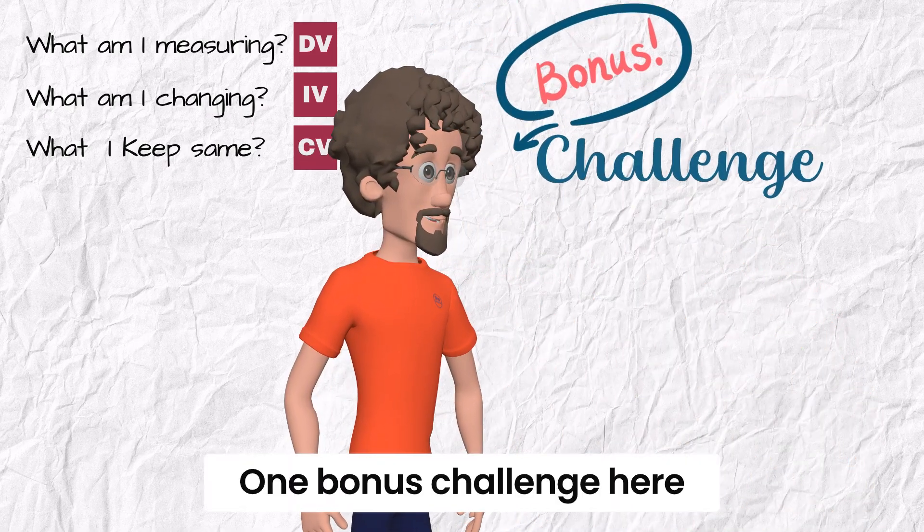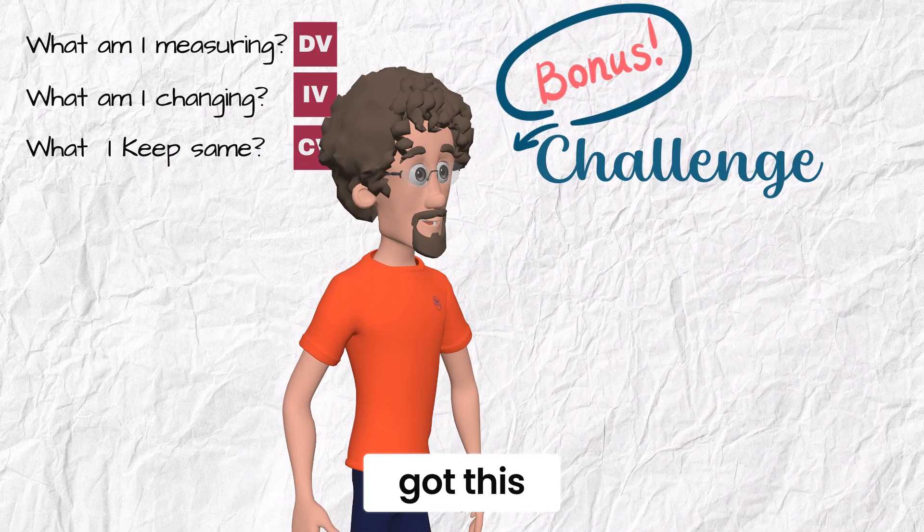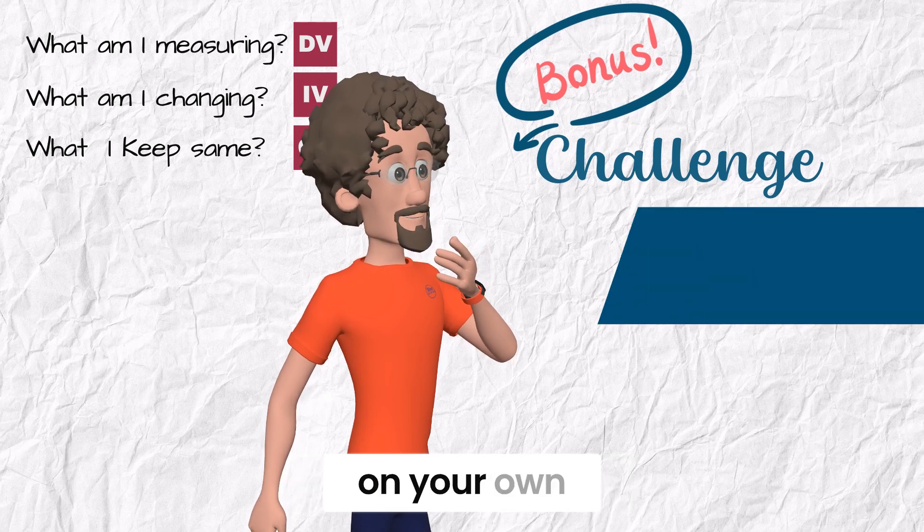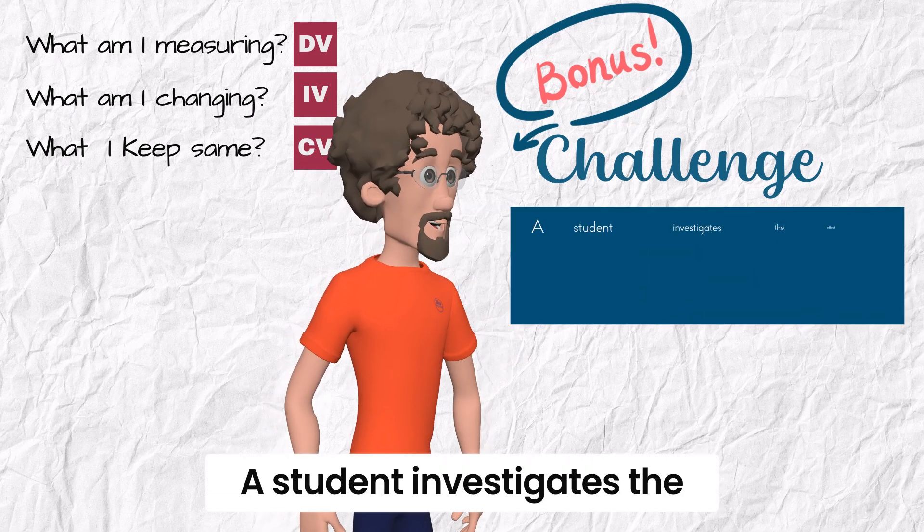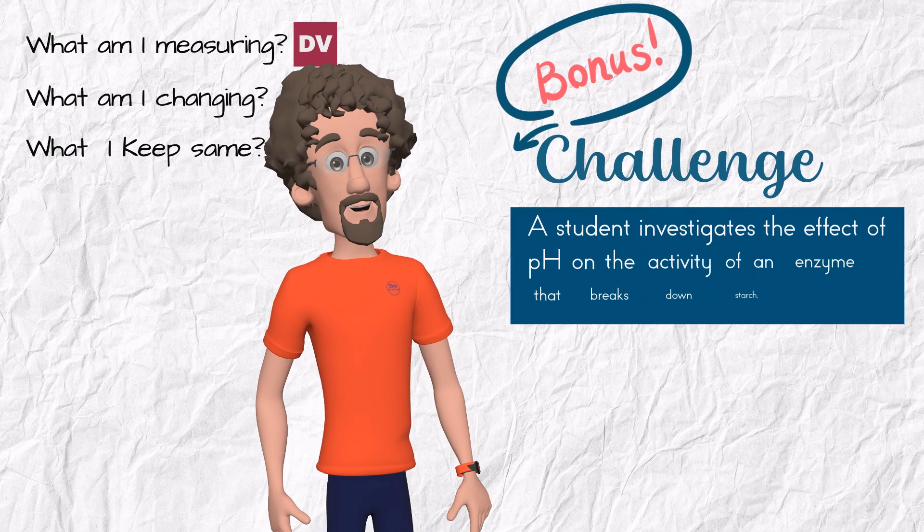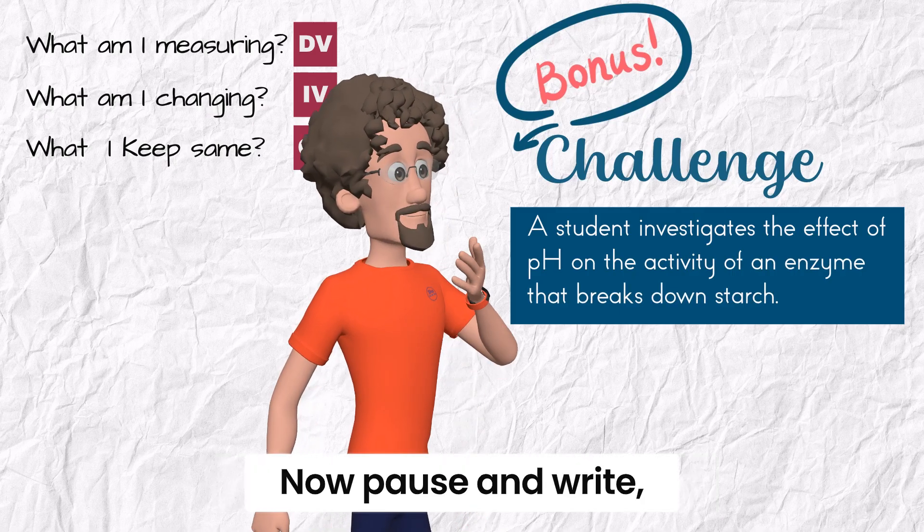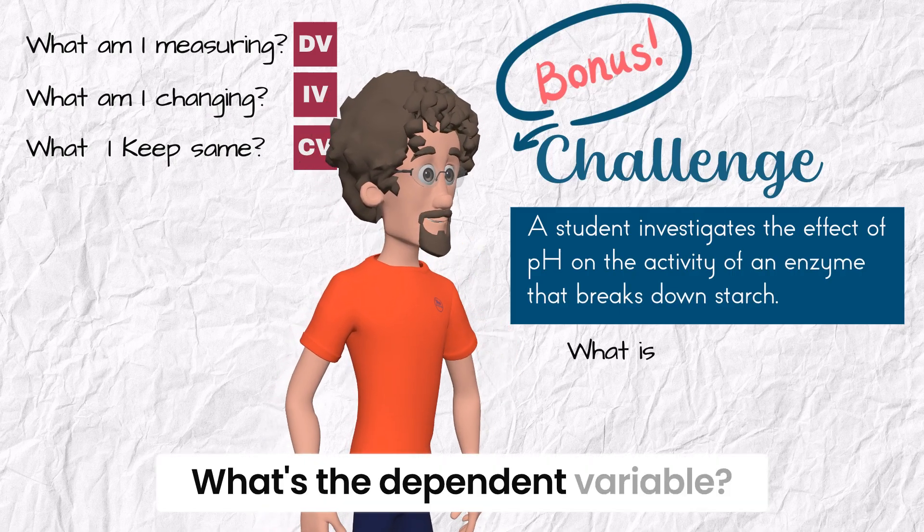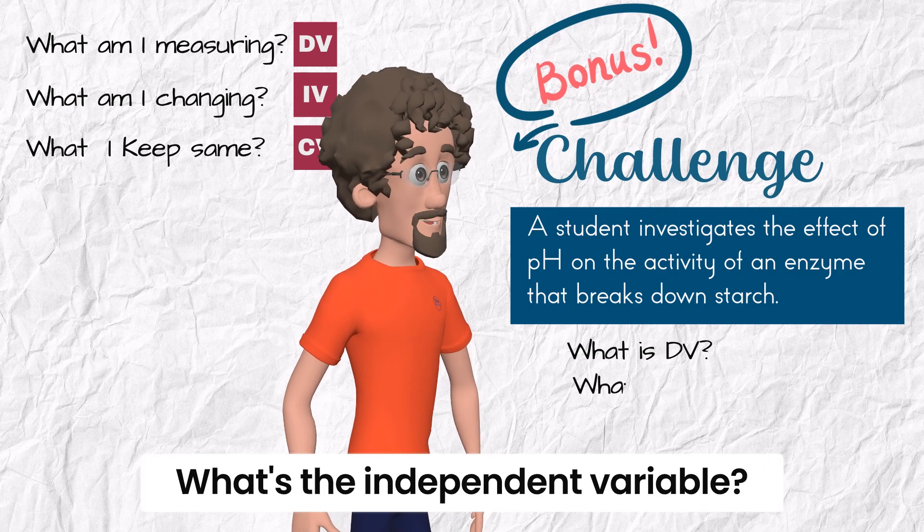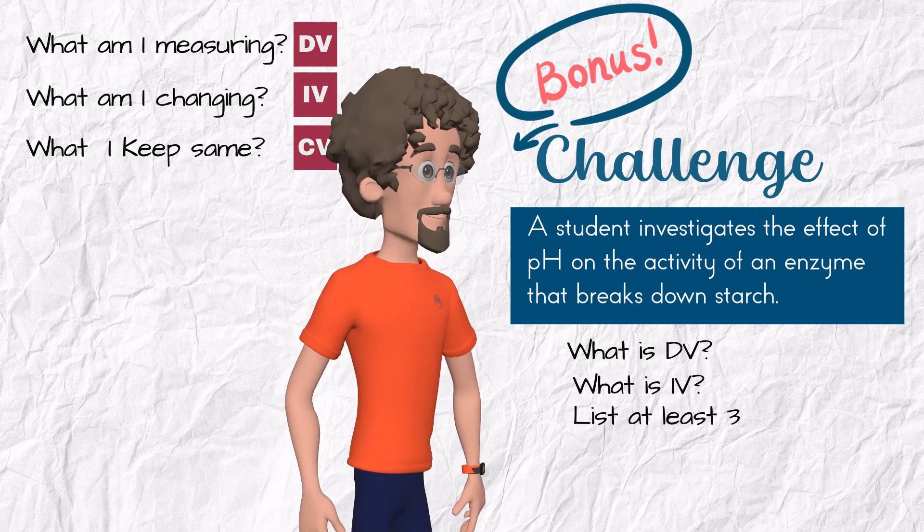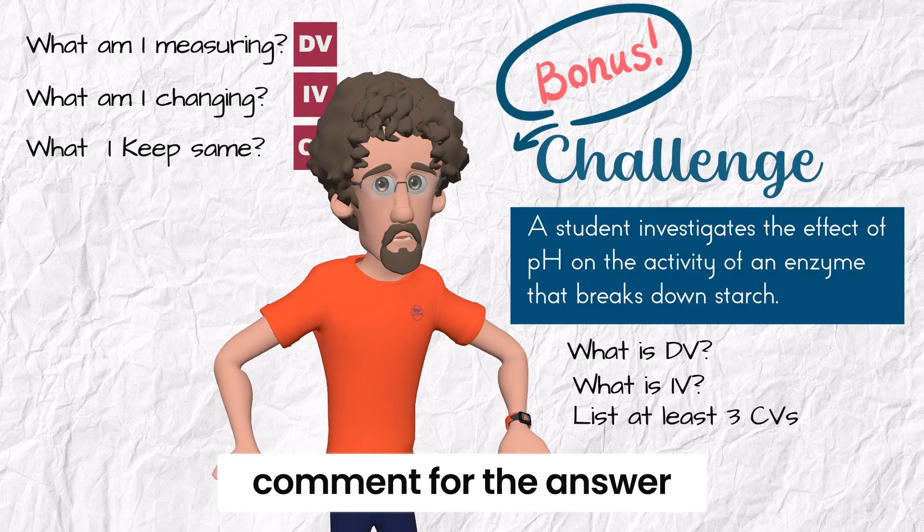One bonus challenge here if you want to test if you've really got this: a student investigates the effect of pH on the activity of an enzyme that breaks down starch. Now pause and write: What's the dependent variable? What's the independent variable? List at least three control variables. Then check the pinned comment for the answer.